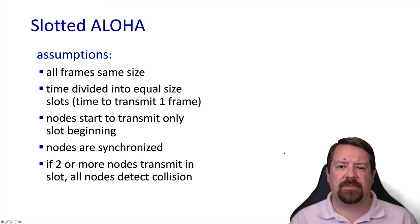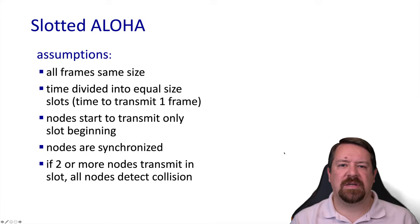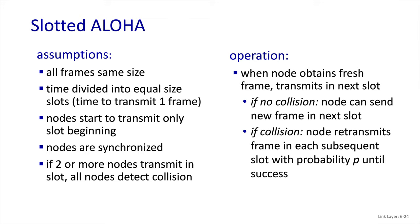In slotted Aloha, all frames are the same size and a time slot is exactly the right amount of time to transmit one frame. Nodes are required to only start transmitting at the beginning of a slot. It also requires that nodes are synchronized so they're all on the same page when it comes to the start time of slots. If there are multiple transmissions in the same slot, then all the nodes detect this collision. When a node has a frame to send, it sends it as soon as the next slot starts. However, if there is a collision, the node retransmits using a probability p to determine whether to try in each successive slot, until it successfully sends the frame.